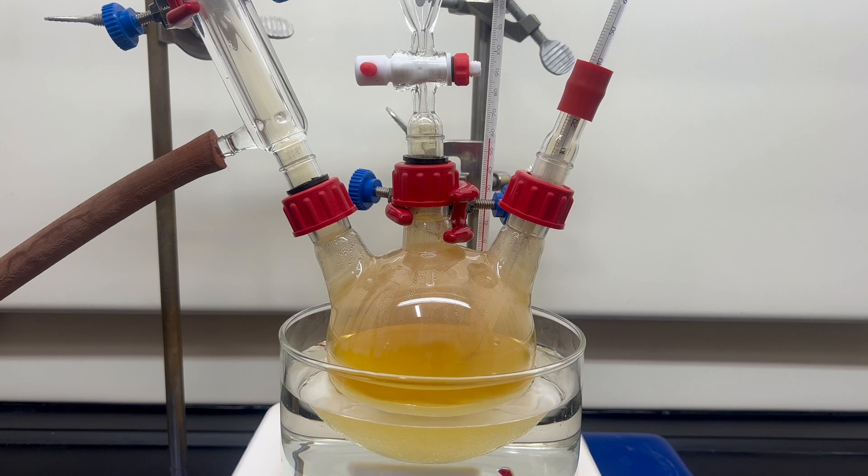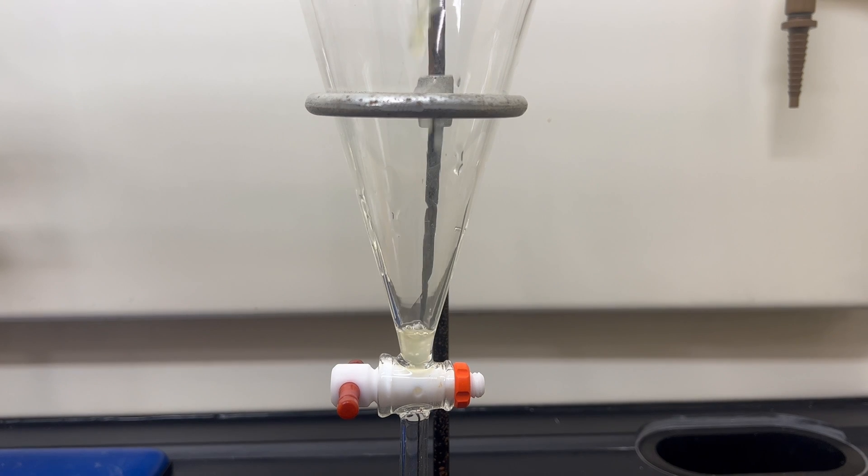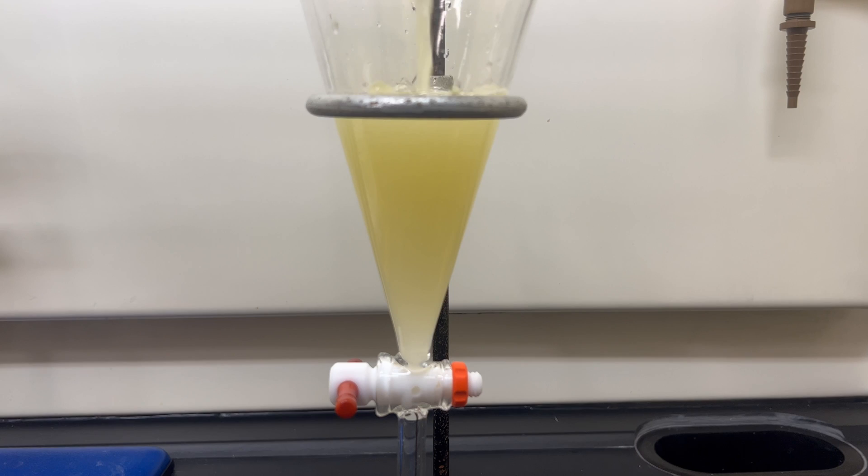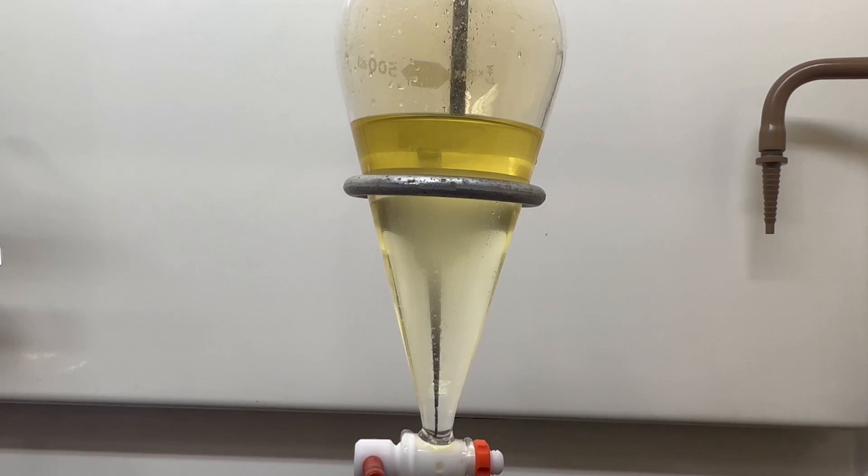At the end of an hour of reflux, the flask is allowed to cool to room temperature. Once cool, the contents are then transferred to a separatory funnel. The bottom layer contains acid and the top is nitrobenzene.